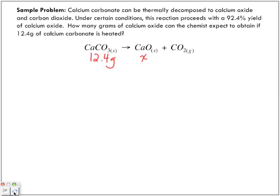So it's calcium oxide that we're trying to figure out. That's what we're trying to figure out. So if we've got 12.4 grams of calcium carbonate, what can we find about calcium carbonate from here?